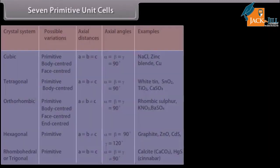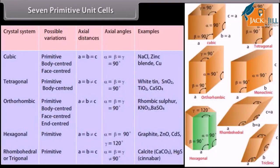There are seven types of primitive unit cells. Their characteristics, along with the centered unit cells they can form, have been listed in the table.